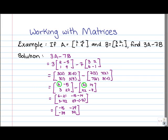So the answer for 3A minus 7B is negative 15, negative 29, negative 39, and positive 34.